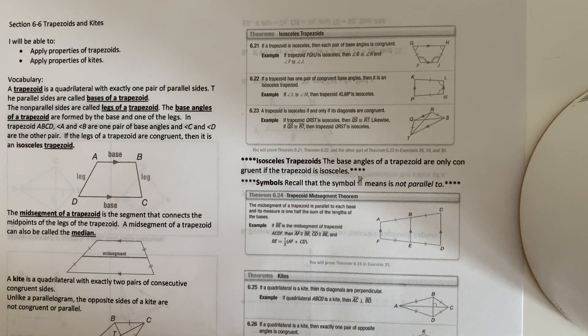A trapezoid is a quadrilateral with exactly one pair of parallel sides. The parallel sides are called bases of a trapezoid. The non-parallel sides are called legs of a trapezoid.